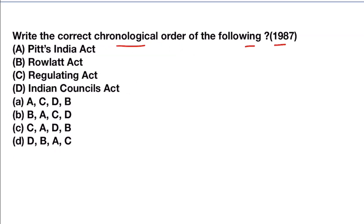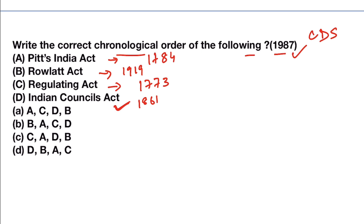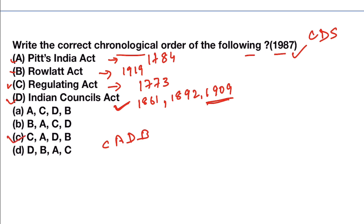Write the correct chronological order of the following. Asked in 1987 then repeated in the CDS exam: Pitt's India Act, Rowlatt Act, Regulating Act, and Indian Councils Act. Pitt's India Act came in 1784. Rowlatt Act 1919, because of which the Jallianwala Bagh Massacre happened. Regulating Act in 1773. There were three Councils Acts starting from 1861, then 1892, and the last one was 1909. So the correct chronological order is C, A, D, B — because even if we take the last Indian Councils Act, it still comes before the Rowlatt Act. So the answer will be C.